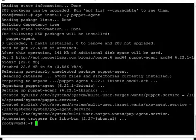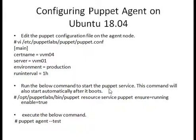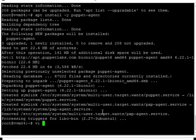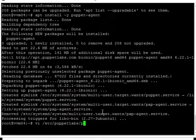The Puppet agent installation is completed. Now we will configure the Puppet agent on the Ubuntu machine. This is the configuration file located at /etc/puppetlabs/puppet/puppet.conf. The configuration includes: the certificate name, the master server name, the environment, and the run interval for regular scheduled runs. We are now doing the configuration on vvm04, which is our Ubuntu machine.